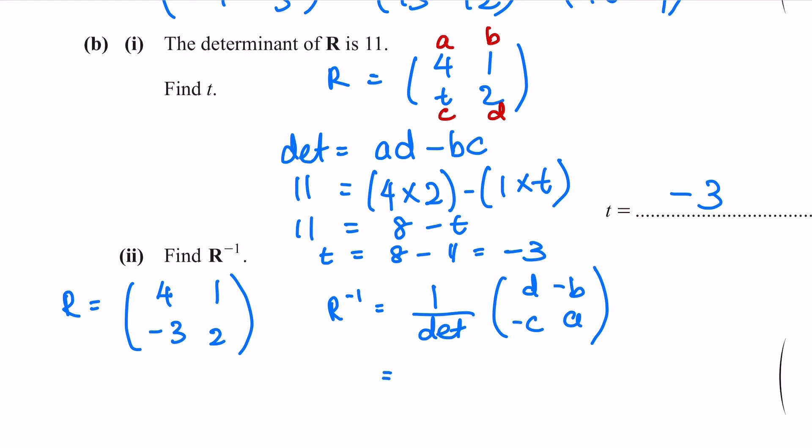Let's fill in the formula. The determinant for R was 11. d is 2, so I'm gonna put it on the top left. b was originally 1, so I'm gonna put a negative in front here, so it will be -1. c is -3, so whenever you add a negative in front, both negatives will become positive, so it will become positive 3. Lastly, a is 4, so 4 will be on the bottom right.